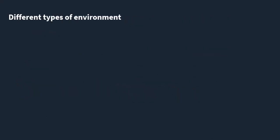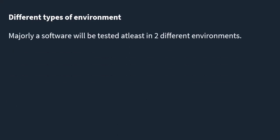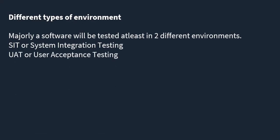There are different types of environments in real projects. Majorly, software will be tested in at least two different environments: SIT, or System Integration Testing, and UAT, or User Acceptance Testing. These are the two environments that a tester will typically be testing in.